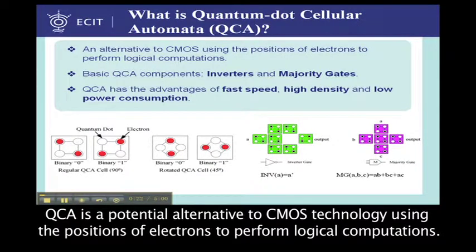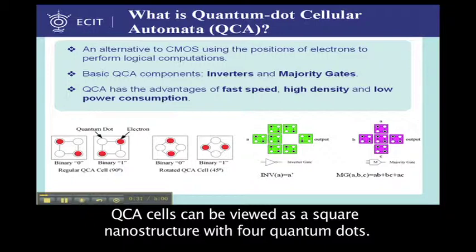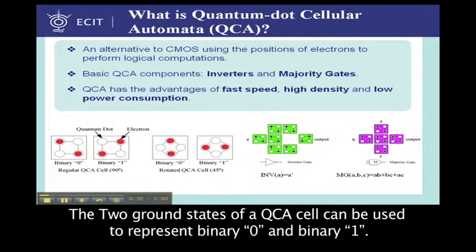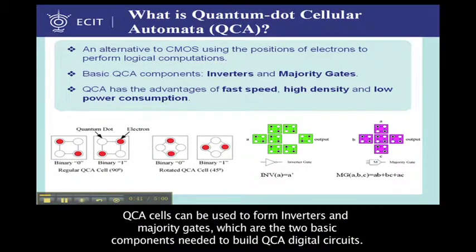QCA is a potential alternative to CMOS technology using the positions of electrons to perform logical computations. QCA cells can be viewed as a square nanostructure with four quantum dots. The two ground states of a QCA cell can be used to represent binary 0 and binary 1. QCA cells can be used to form inverters and majority gates, which are the two basic components needed to build QCA digital circuits.